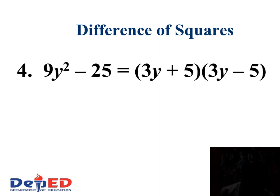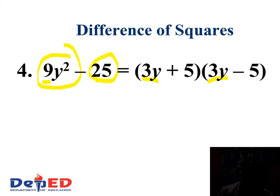Another example: we have 9y² minus 25. Is there a GCF? None. So let us get the square root of 9y², which is 3y. And the square root of 25 is 5. So this is an example of a difference of two squares, and the factors are (3y + 5) and (3y − 5).